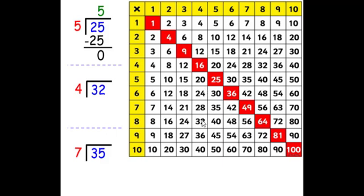And that means that 4 goes into 32 8 times. 8 times 4 is 32, 32 minus 32 is 0. 7 goes into 35 5 times. 5 times 7 is 35. 35 minus 35 is 0.